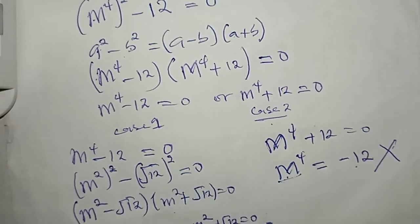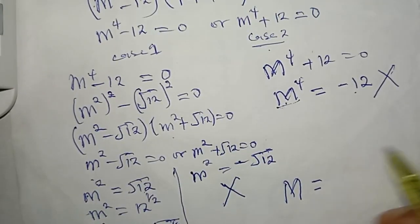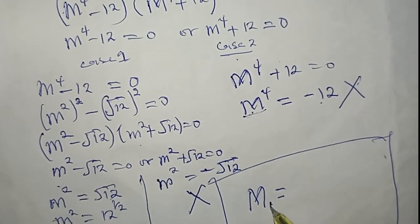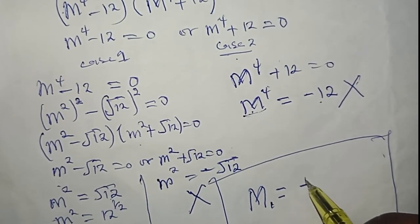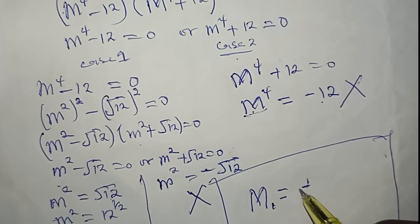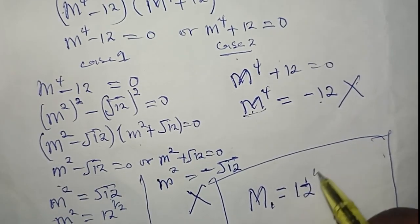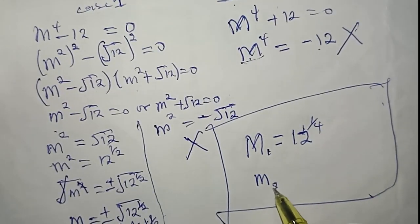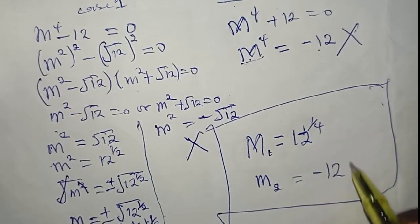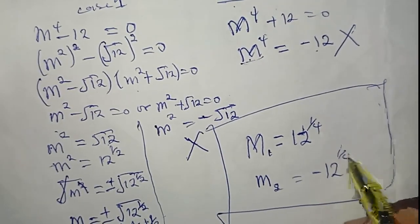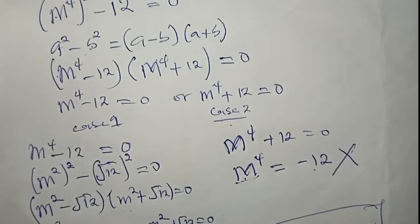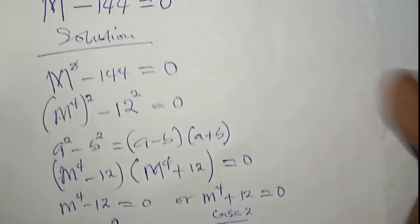At the end of the day, the two real values of m we've got are: m₁ equals positive 12 to the power one over four, and m₂ equals negative 12 to the power one over four. Next, I'm going to run a quick check in the next few minutes to verify these values.